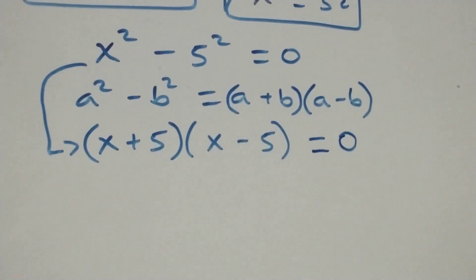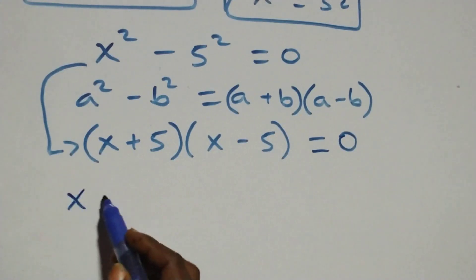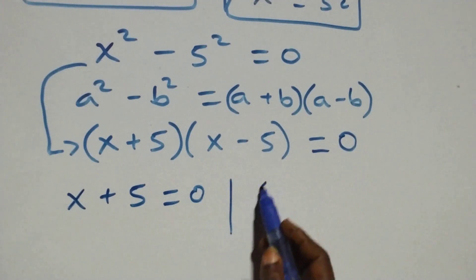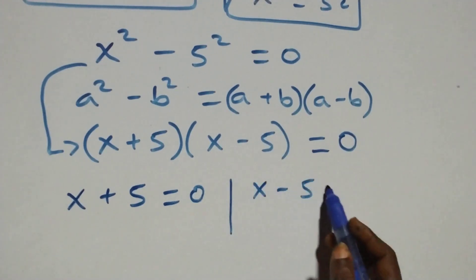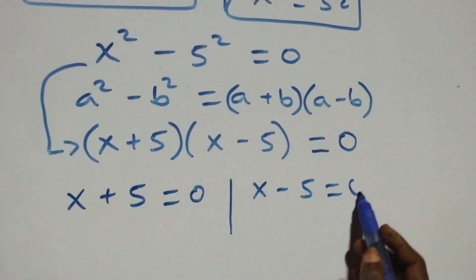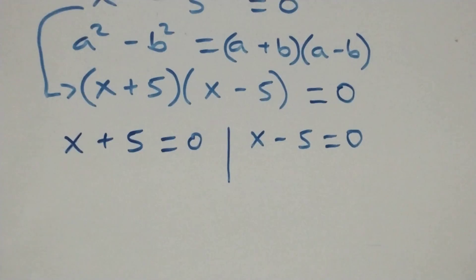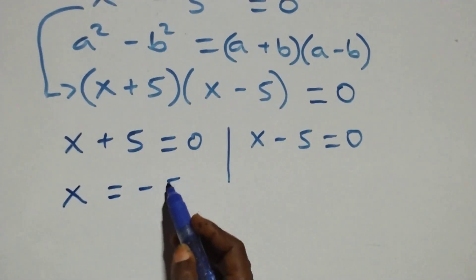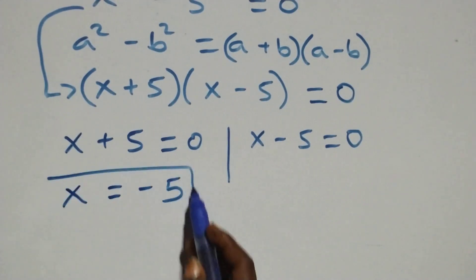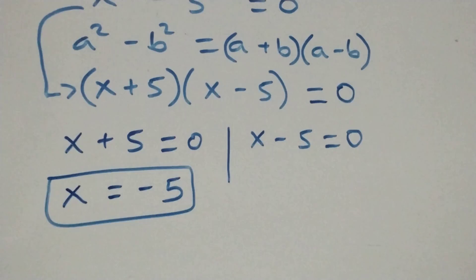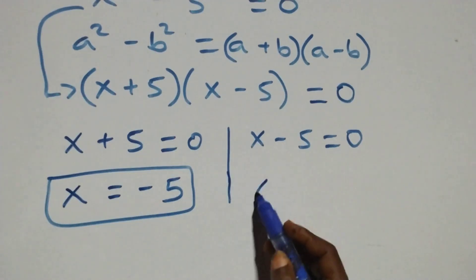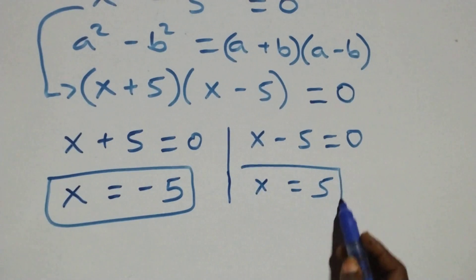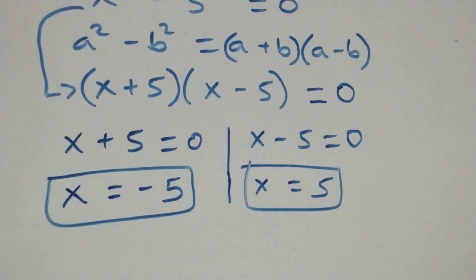Also, we have two possible cases: x plus 5 equals to 0, or x minus 5 equals to 0. Solving, we have x equals to minus 5, which is a real solution, and x equals to 5, which is also a real solution. We also have two real solutions here.